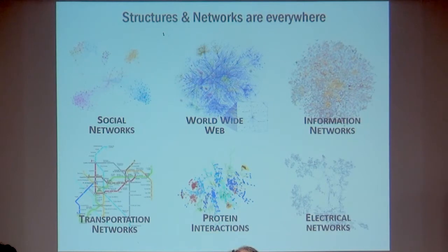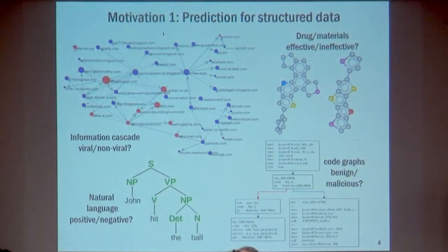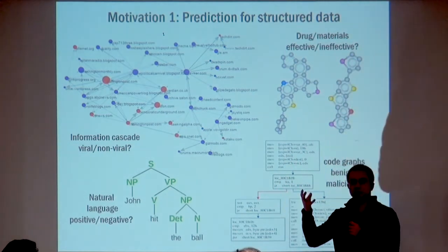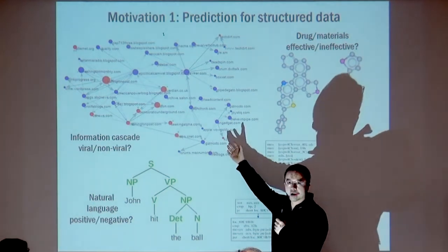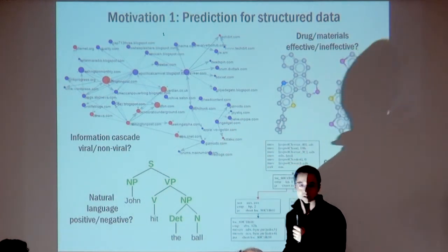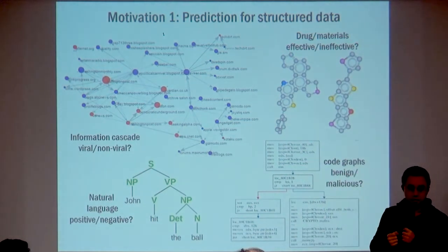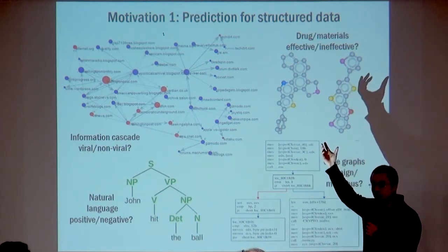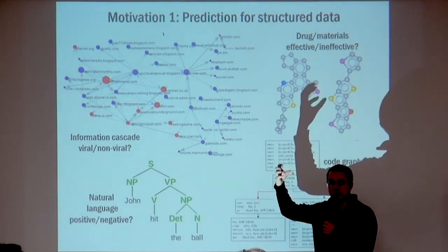Let me give three concrete examples showing how typical algorithms are designed for these types of problems. The first set is prediction for structured data. One task: given the spreading pattern of a piece of news in a social network in the first week, predict whether it will go viral. Each data point input is a graph, and you want to predict the popularity after one month. You might also have material science problems where the input is a molecule — each node is an atom connected via chemical bonds — and you want to predict whether a material will be effective before synthesizing it.